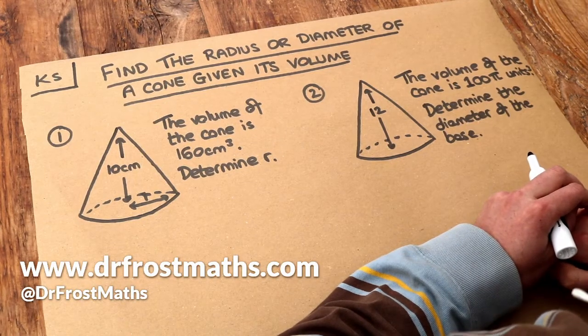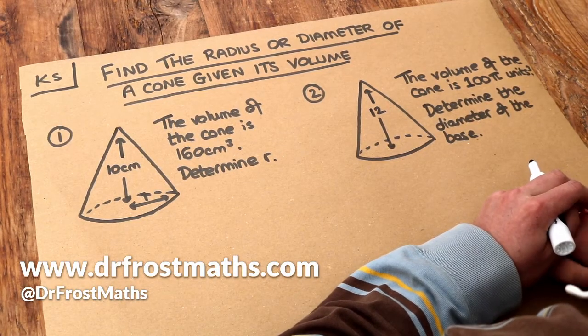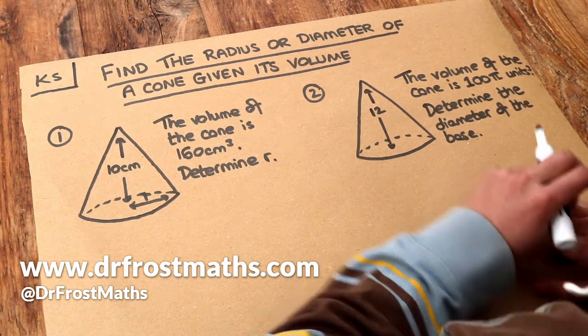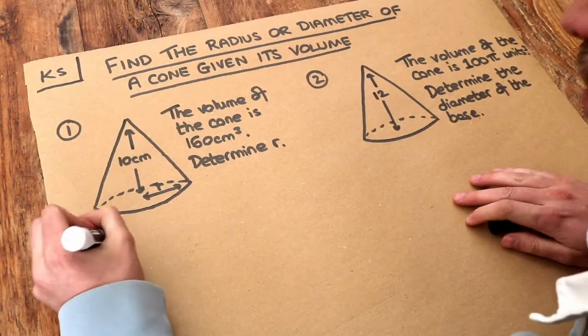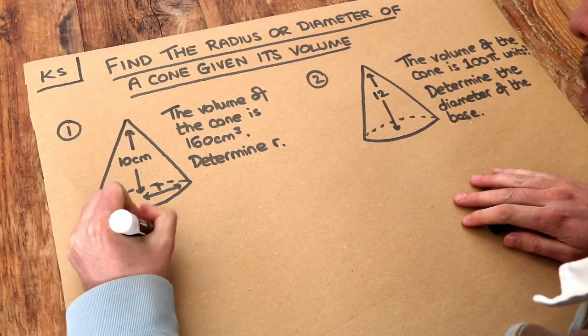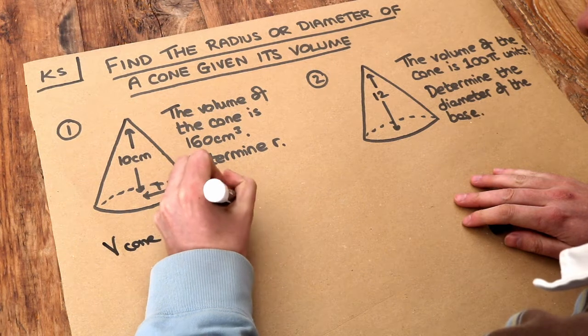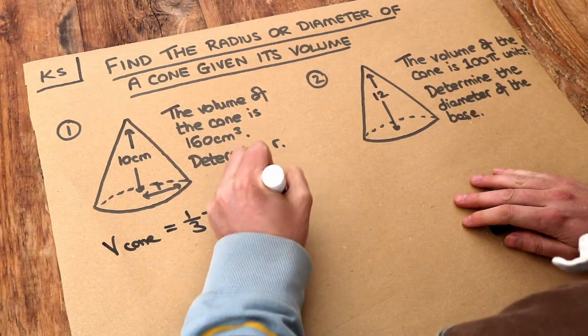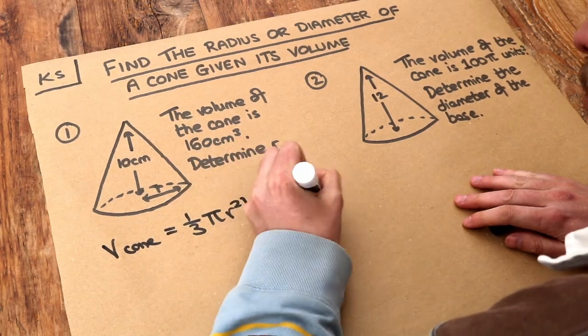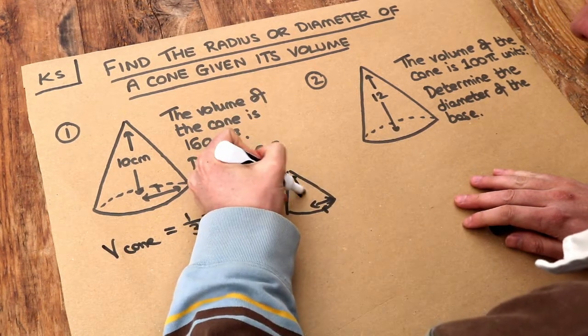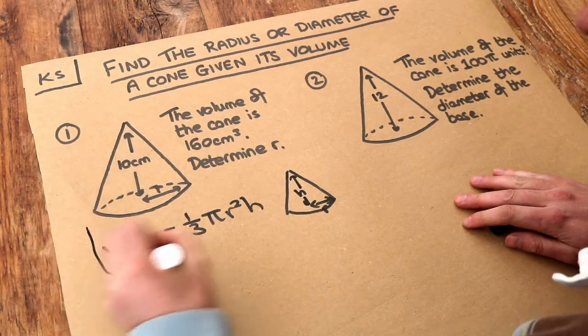Hello and welcome to this Dr Frost Maths key skill video on finding the radius or diameter of a cone given its volume. In a previous video we saw how to find the volume of a cone using this formula here. We have one third pi r squared h, where r was the radius of the circle at the base of the cone and h was the height of the cone. That's a key formula we need to use.